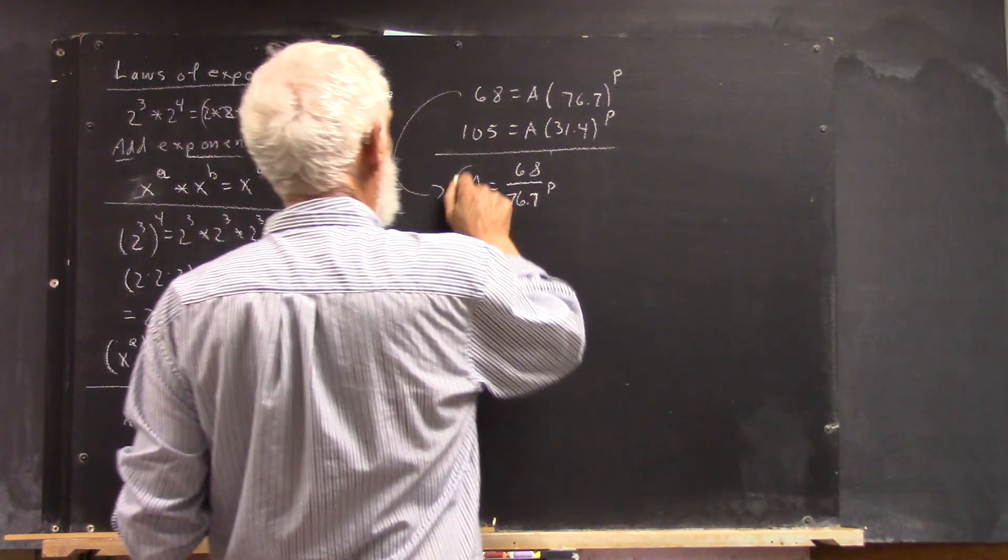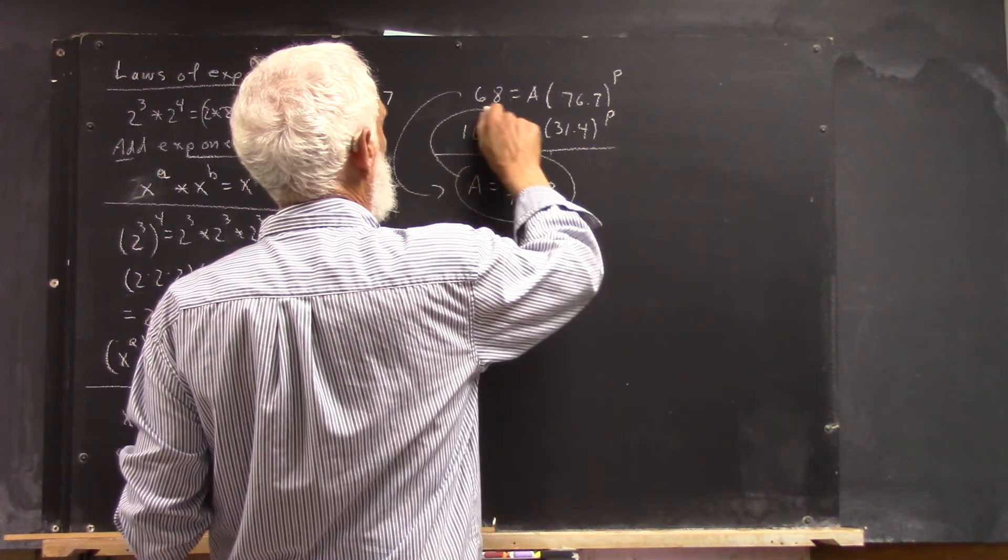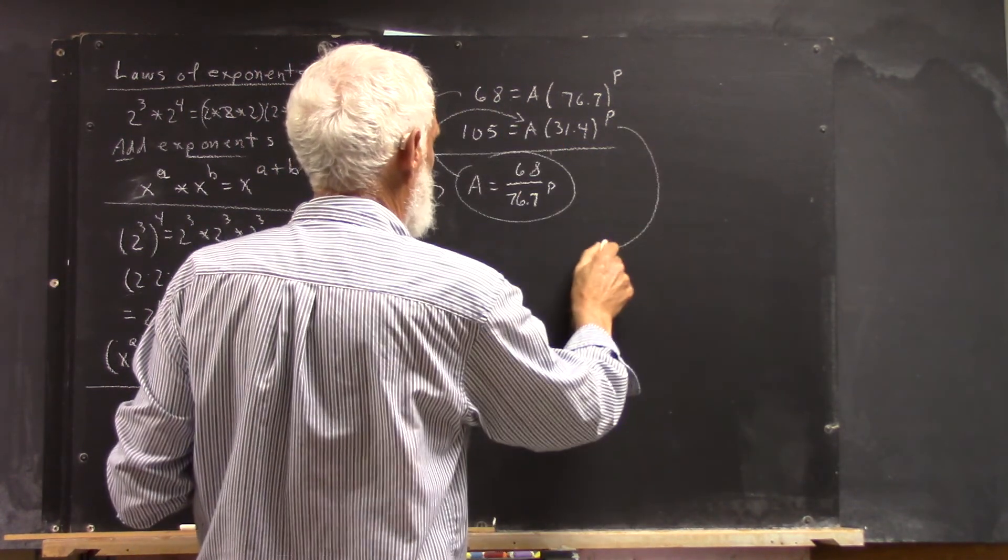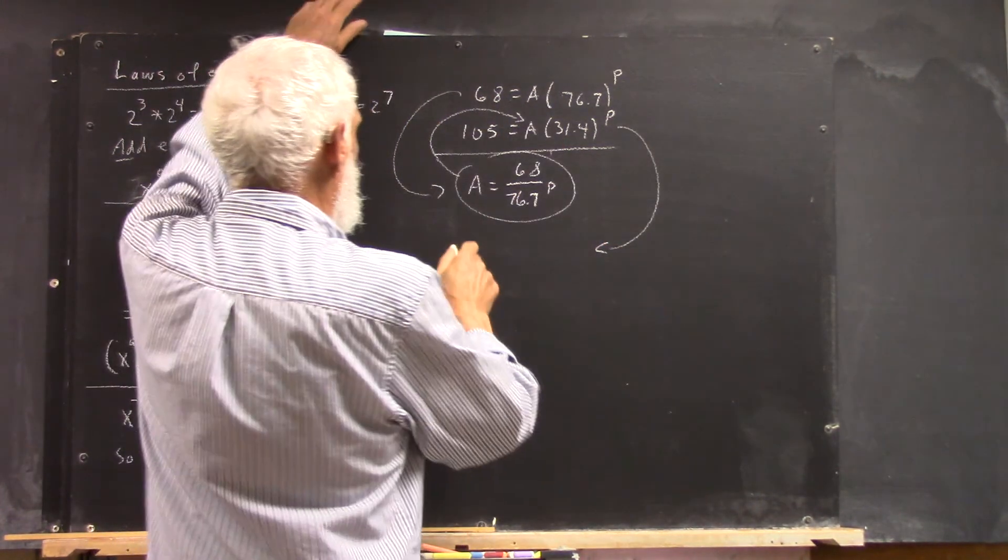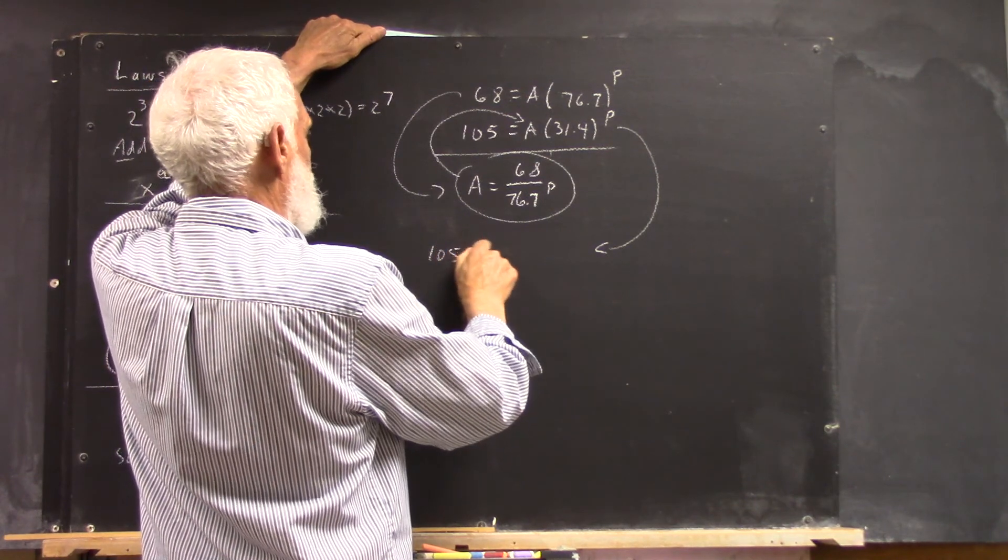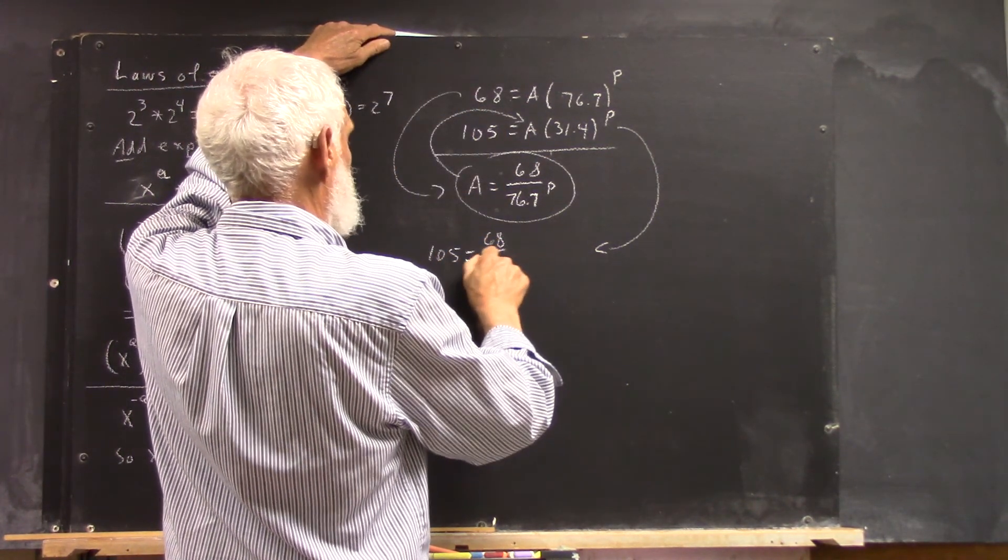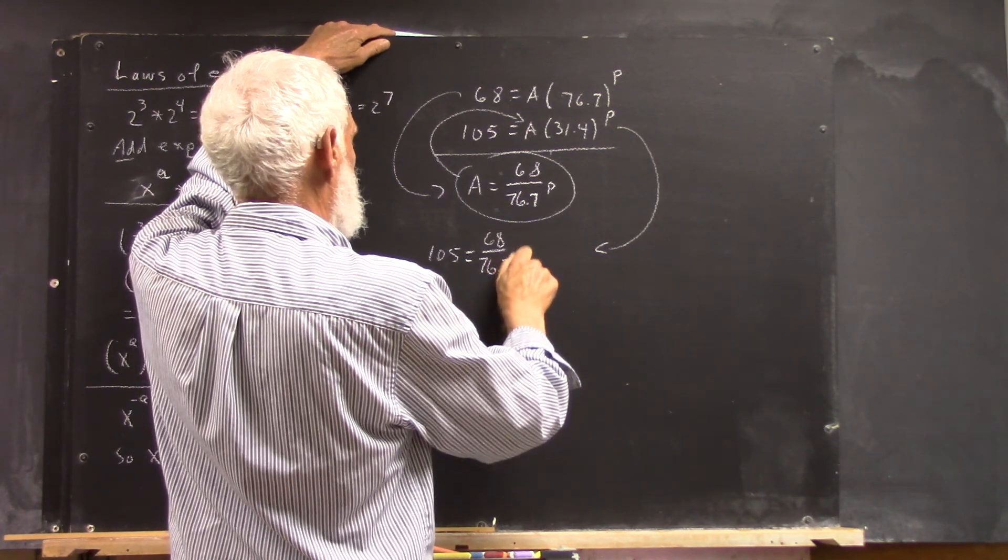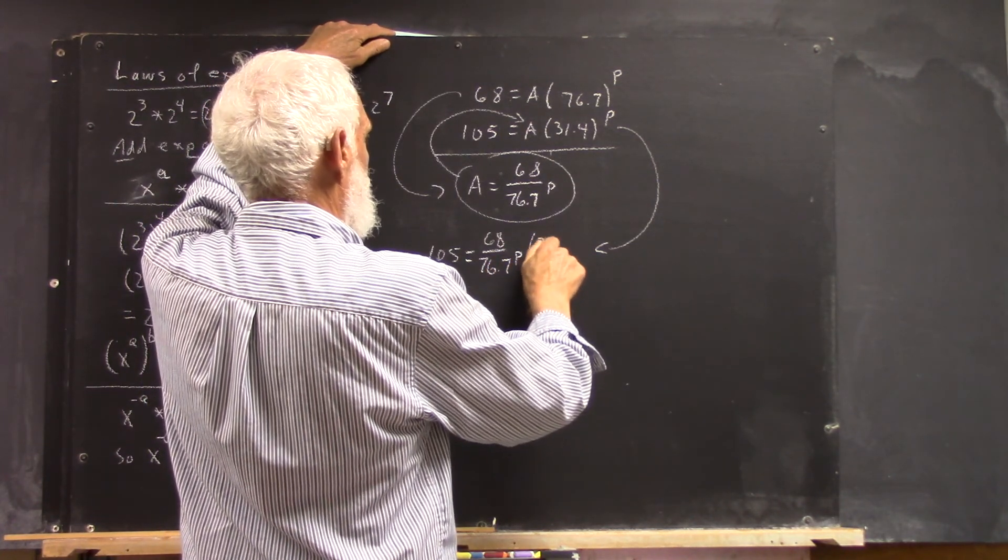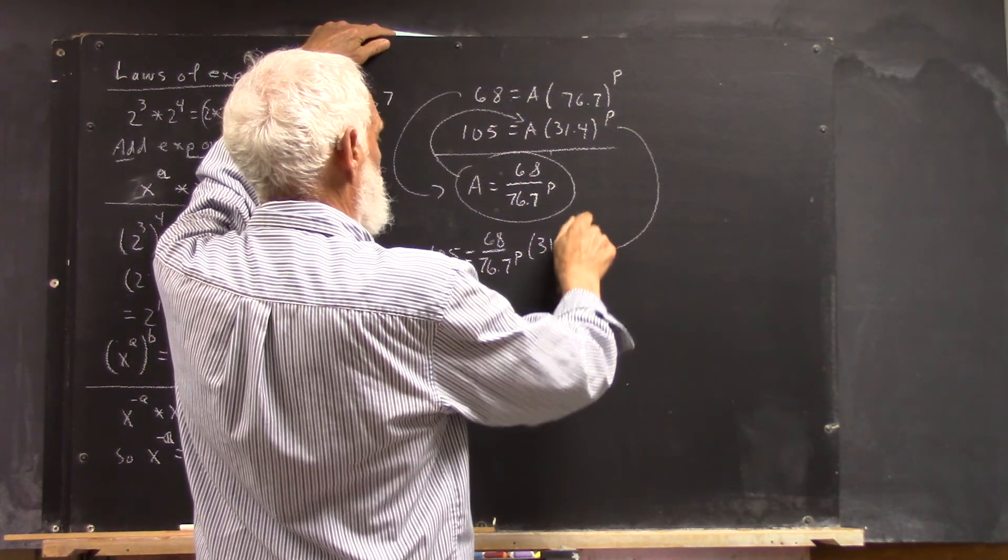Now we take this and plug it in for A here, and out of that we get the equation 105 equals A, but that's now 68 over 76.7 raised to the P times 31.4 raised to the P.